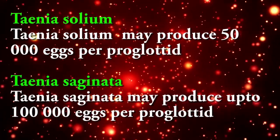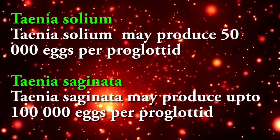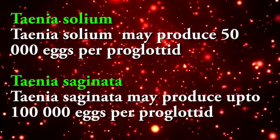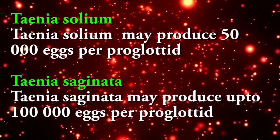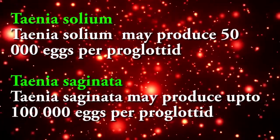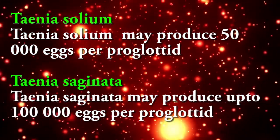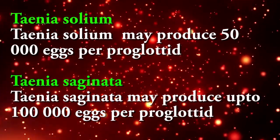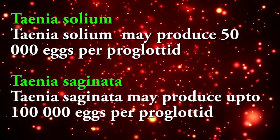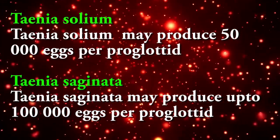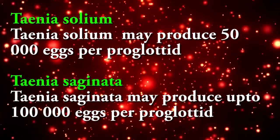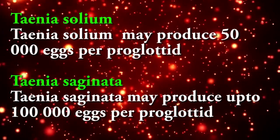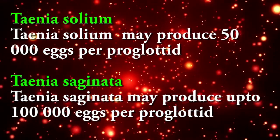Eggs: Taenia solium may produce 50,000 eggs per proglotid. Taenia saginata may produce up to 1 lakh (100,000) eggs per proglotid.